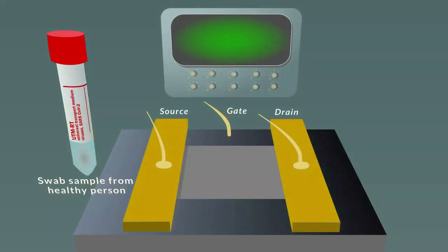They carried out the negative control experiment also. A swab sample from a healthy, uninfected person showed no response. This critical experiment demonstrated proof of concept that the device could be used to distinguish between healthy and infected people.